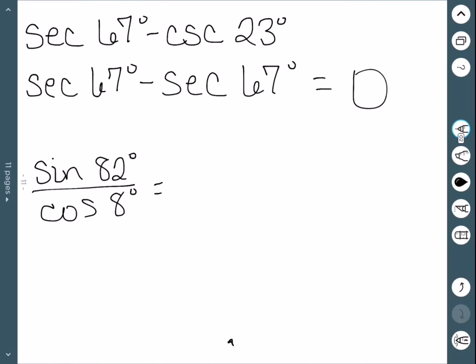Here, once again, we need the angles to be the same. So we'll convert the cosine to sine by doing 90 minus 8, which is 82. And then sine of 82 over sine of 82 is 1.